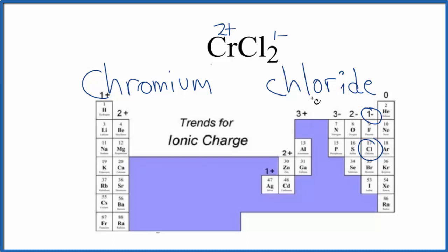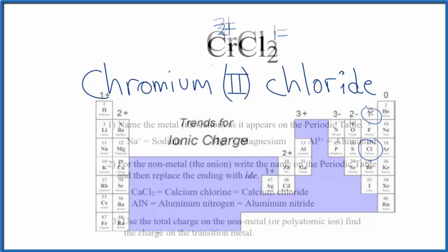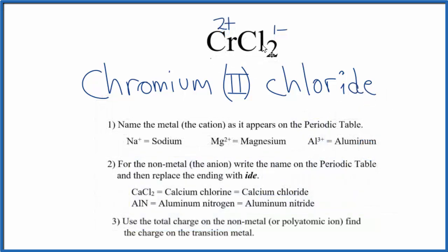So to write the name for chromium chloride, because we have this 2+ on the chromium, we're going to write Roman numeral II in parentheses. This II means that chromium has a 2+ ionic charge. So the name for CrCl2 is chromium (II) chloride.